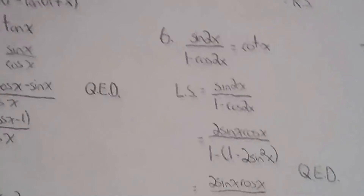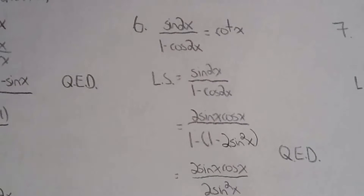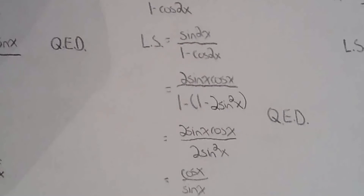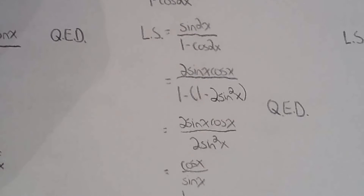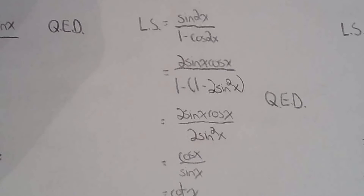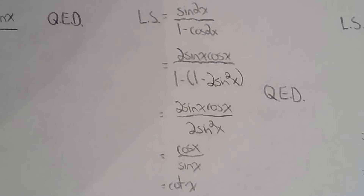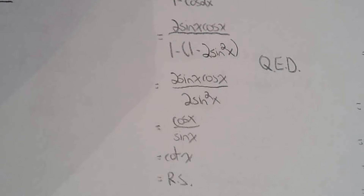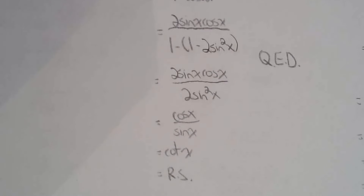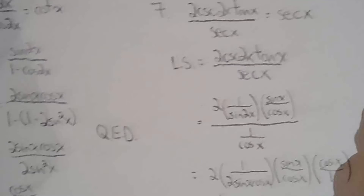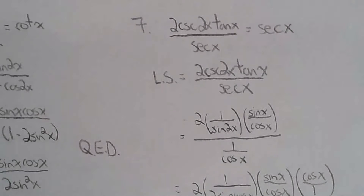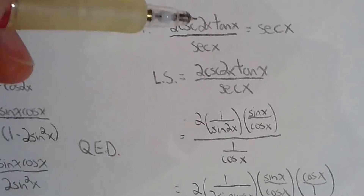For number six, on the left side I used the double angle formula for sine and the double angle formula for cosine. If you didn't use the version I chose, you'd just have an extra step, but it simplifies to cotangent x very nicely.